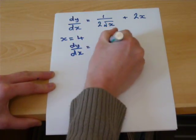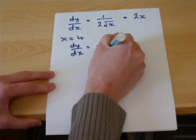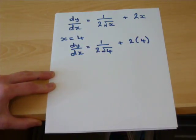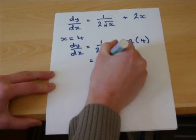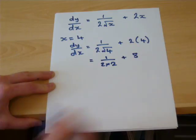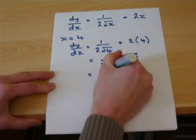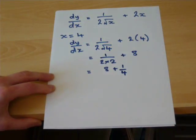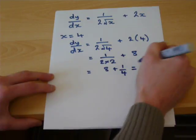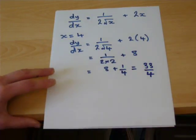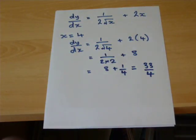1 over 2 square root of 4 plus 2 times 4, which equals 1/4 plus 8, which we can write in top-heavy form. So, the gradient is 33 over 4.